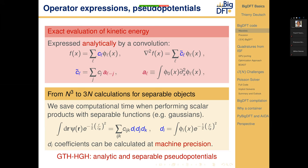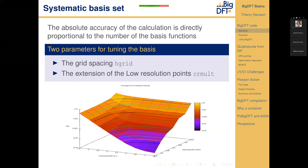The basis set of BigDFT using wavelets is systematic with two parameters to adjust its accuracy: the grid step and the extension of the grid around the molecules. We show for the methane molecule the total energy surface as a function of these parameters, where the desired precision can be achieved by extending the grid and decreasing the grid step.